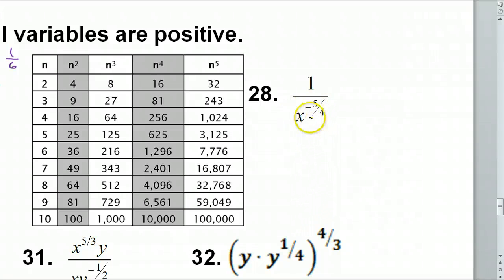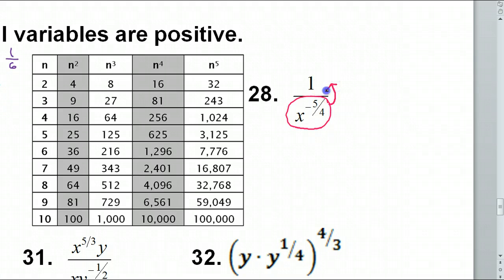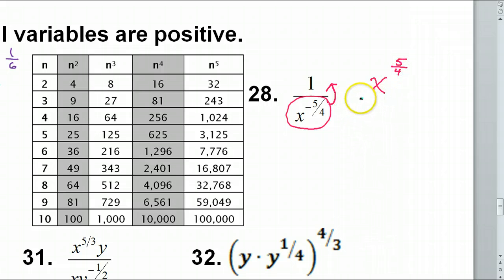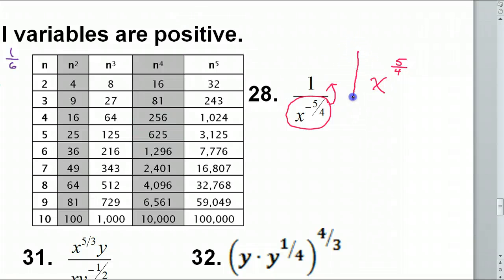Number 28: this expression has a negative exponent, and anything with a negative exponent is on the wrong side of the fraction line. So this is going to have to be brought up, becoming X to the 5/4 power in the numerator. Since there's nothing in the denominator we don't need a 1, and this is the final answer for number 28.